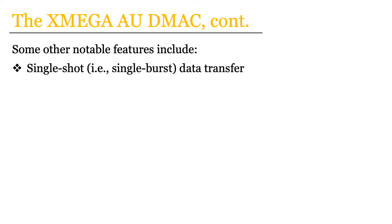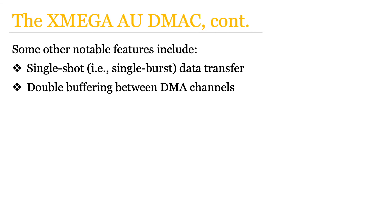Some other notable features of these systems include a single-shot or single-burst data transfer mode, which causes a single burst and only a single burst of data to be transferred upon every single DMA transfer request. Another useful feature depending on the application would be to potentially double-buffer DMA channels, which causes DMA channels to be interlinked. This can be very useful whenever there's a need for continual data transfer, perhaps for audio or video applications or anything of that sort.